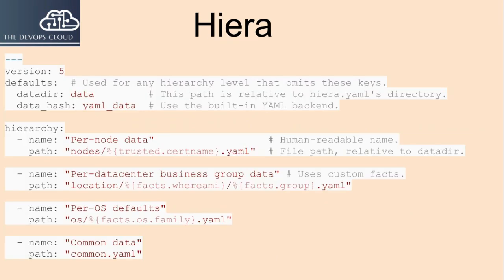Hiera looks up data by following a hierarchy — an ordered list of data sources. Hierarchies are configured in a hiera.yaml file. hiera.yaml is a YAML file containing a hash with up to four top-level keys. The version key is required and must be the number 5, with no quotes.